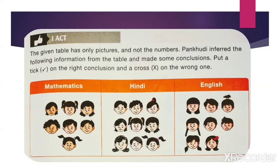First we will find out the number of students in each box. See Mathematics: count 1, 2, 3, 4, 5, 6, 7 — write 7. Then see the Hindi box: count 1, 2, 3, 4, 5, 6, 7, 8, 9 — write 9. And then see English: count 1, 2, 3, 4, 5, 6, 7, 8 — write 8. Now we will write the answers to the following questions.